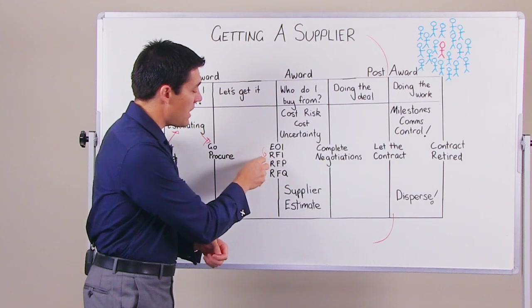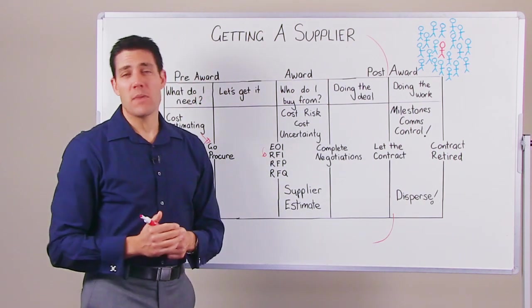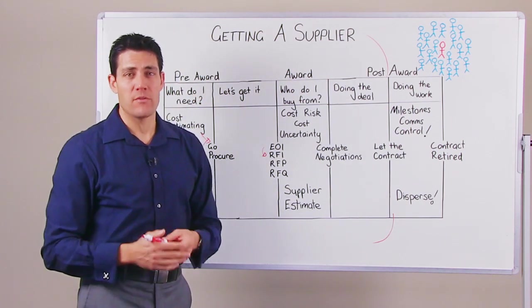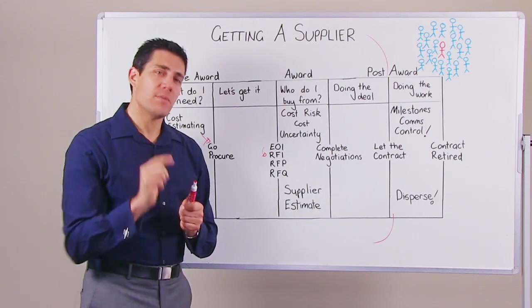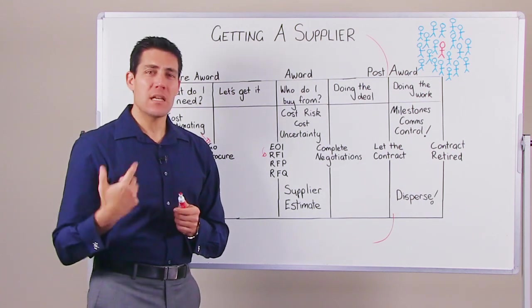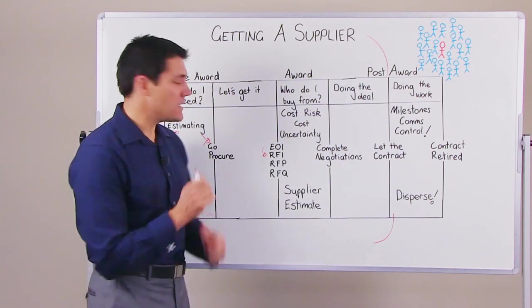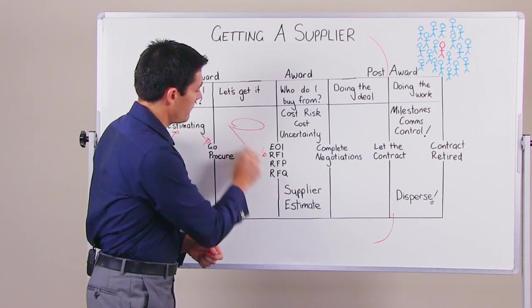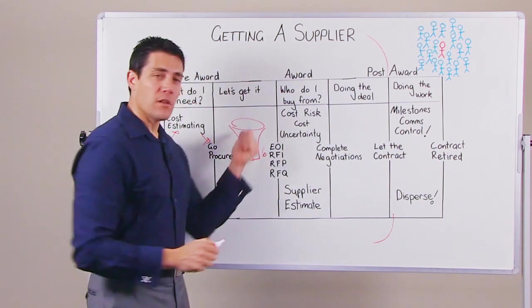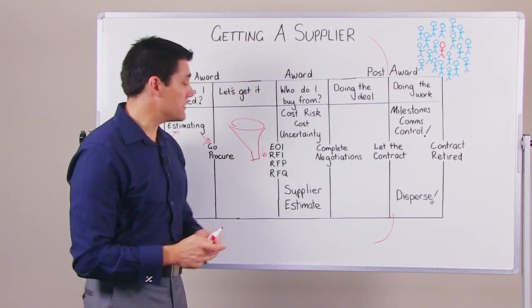Then if you have the time and the project requires it, you might do an RFI, which is a request for information. You're asking more specific information of that partner to get a better understanding of who they are and why they're the best supplier for you. Once again, the whole intent is to whittle down your funnel of potential suppliers down to a handful.